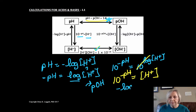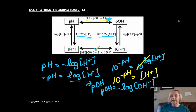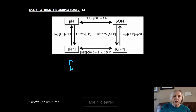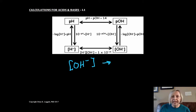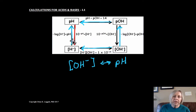The lowercase p in pOH means 'take the negative log of whatever follows,' so pOH = −log[OH⁻], and there's a mirrored formula just like for H⁺. So far we've seen all of these as one-step problems. However, if you have OH⁻ and you're going to pH — or vice versa — that will always be a two-step problem. You can go from hydroxide to pOH and then to pH, or from hydroxide to H₃O⁺ and then to pH.